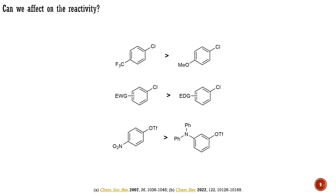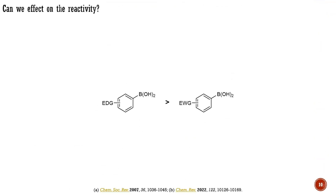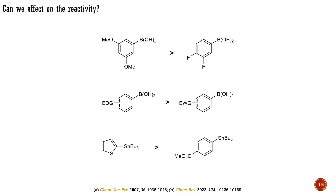For example, 4-chlorobenzotrifluoride is a better coupling partner than 4-chloroanisole. Similarly, 4-nitrophenyl triflate is more reactive in cross-couplings than aryl triflates possessing electron-donating groups. The opposite is true for organometallic coupling partners: organometallics possessing electron-donating groups are more nucleophilic and are better substrates for transmetallation compared to those having electron-withdrawing groups. To be more specific, boronic acids equipped with methoxy groups are more reactive in Suzuki couplings than boronic acids with fluorine substituents.